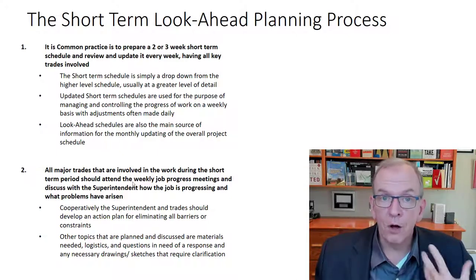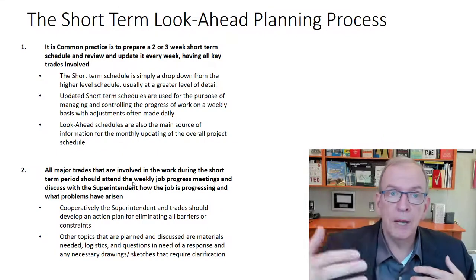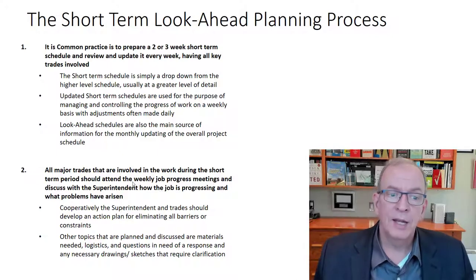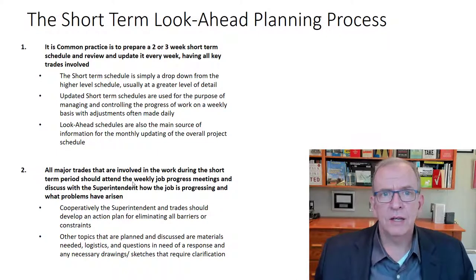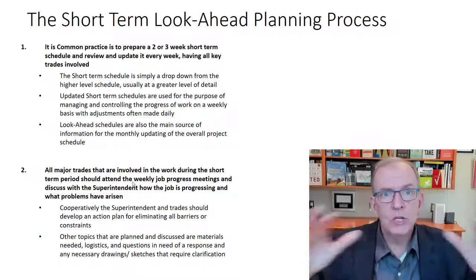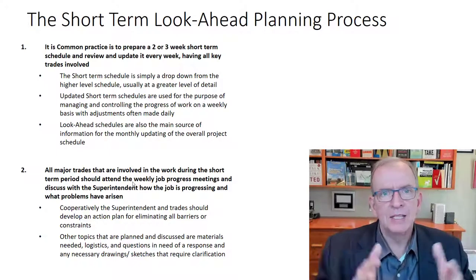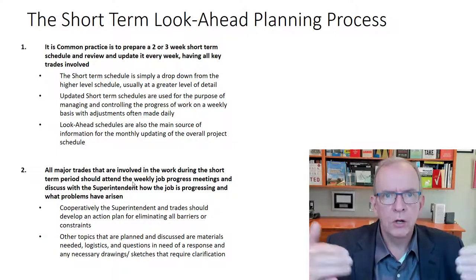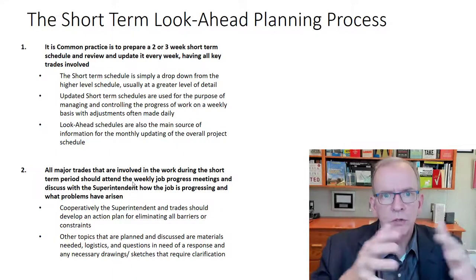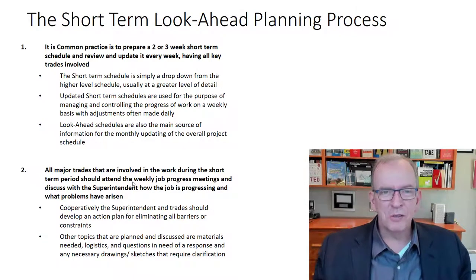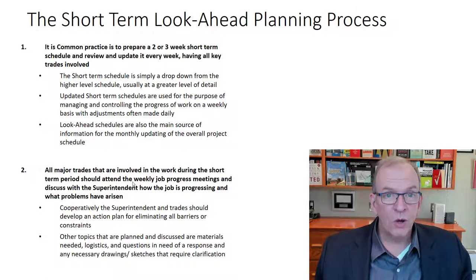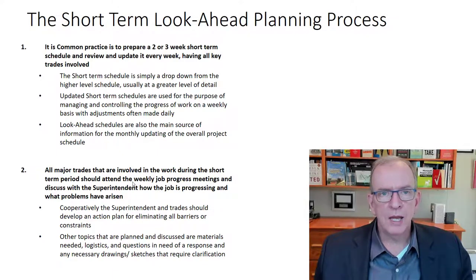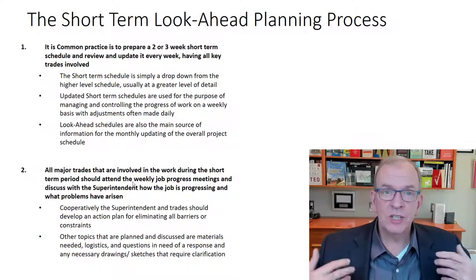All the major trades involved in the work coming up are part of these weekly meetings, because if there's a problem, you want to know about it there. Traditionally, it can be done somewhat autocratically by some site superintendents — there's pressure coming down from the original baseline schedule with specific dates allocated. When contracts were signed, trades agreed to reasonably try to fulfill those dates. But when they really want the work, they're more likely to say yes to things, and even in two-week look-aheads, if there's a lot of pressure, very often they'll say they can do it but don't really think they can — and that's just setting yourself up for failure.